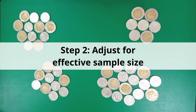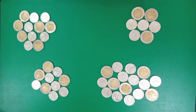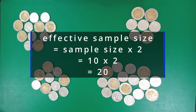In cluster sampling, it is usually advised to adjust your calculated sample size to account for possible homogeneity within or heterogeneity between clusters. A common strategy is to double the calculated sample size to get our effective sample size. So the effective sample size in our study will be 20.